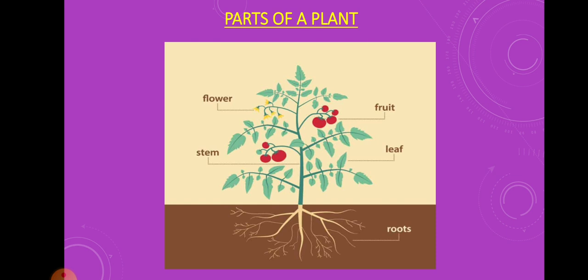The roots absorb water and minerals from the soil and anchor the plant in the ground. The stem supports the plant above ground and carries the water and minerals to the leaves. The leaves collect energy from the sun and make food for the plant.